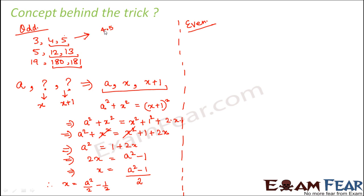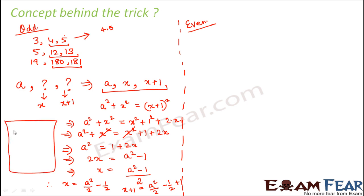Since 4.5 was between 4 and 5, we subtracted 0.5 (i.e., 1/2) to get 4, and added 0.5 to get 5. So x = a²/2 − 1/2 and x + 1 = a²/2 + 1/2. This is the formula behind trick one. Instead of memorizing this formula, the trick is easier to remember in three steps.